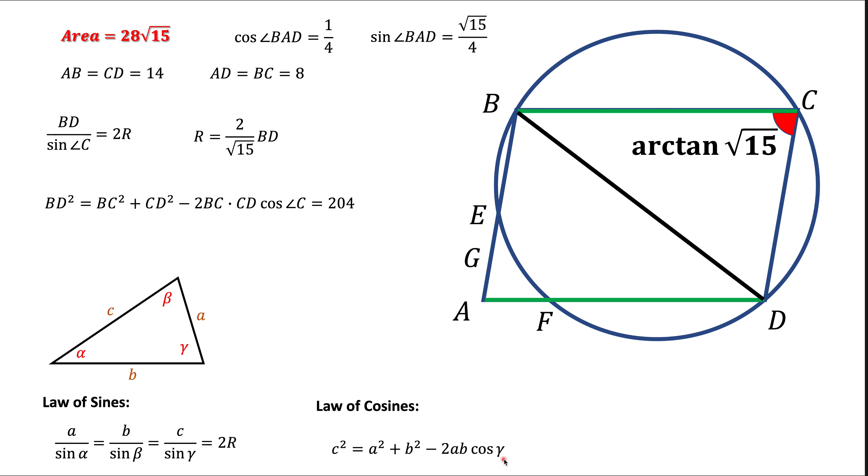Notice that the right hand side here is completely known to us. So if you plug all we have here, all the values here, we get 204. And that means that BD is the square root of 204. Now we plug BD into this formula for radius, and we get our final answer is 4 times the square root of 17 over square root of 15.